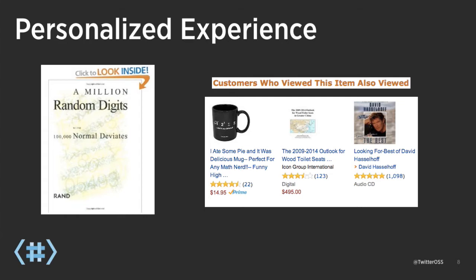These retail companies want to be more like the personalized Amazon experience. When I go and look at my favorite joke book on Amazon — which is 'A Million Random Digits and a Hundred Thousand Normal Deviates,' literally a big book of random numbers — it has excellent reviews, about 550 of them, mostly about the plot line. Amazon recognizes you came to view this and tells you that customers who viewed this item also viewed a funny math mug, the 2009 to 2014 world report on wooden toilet seats, and the best of David Hasselhoff audio CD.